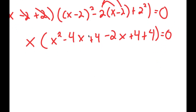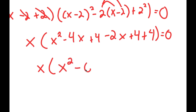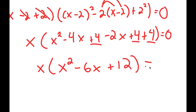From here we can simplify what's in the parentheses. So I get x times (x² minus 4x plus 4 minus 2x plus 4 plus 4). This simplifies to x². Negative 4x minus 2x is negative 6x. And I'm left with plus 4 plus 4 plus 4, which is plus 12. This is equal to 0.